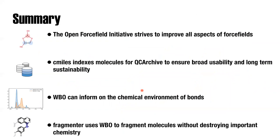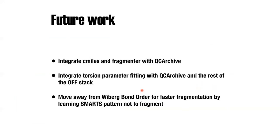In summary: we use CMILES to index molecules, Wiberg bond orders can inform the chemical environment, and when we fragment we use the Wiberg bond order to tell us how much we have or haven't destroyed the chemical environment. For future work, we need to integrate this with QC Archive, and also develop some way to score a fragmentation scheme — given a set of molecules and fragmentation parameters, how well does it do overall?